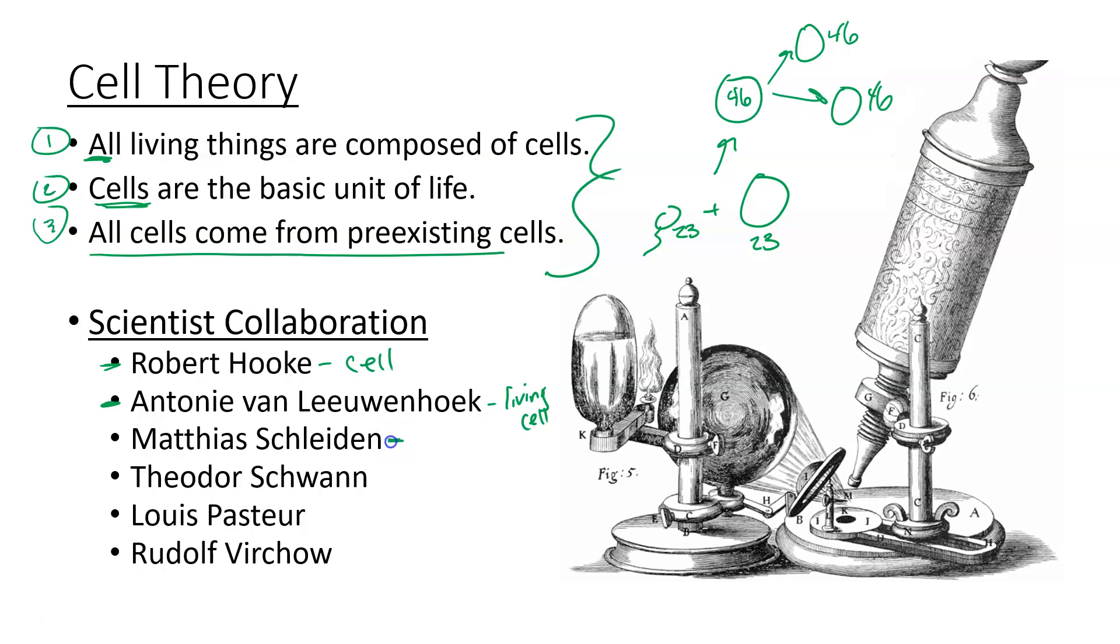Matthias Schleiden was a contributor to the cell theory in that he worked with plant cells. He not only looked at a variety of plant tissues but noticed that every single plant that he identified or every single plant tissue that he investigated was in fact made of cells. And again, Theodor Schwann was doing the same work but was doing the work alongside him on animals. And so together, those two constituted this first component which is all living things are composed of cells. So we have the first two guys which worked towards that second component where cells are the basic unit of life because individual cells make up that base unit. These two worked alongside each other on component one which is that all living things are composed of cells. It doesn't matter if you're plant or animal, everything is made of cells.